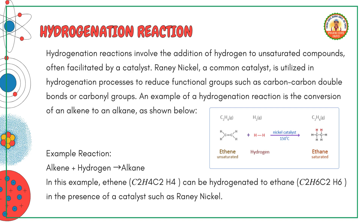Example reaction: alkene plus hydrogen gives alkane. In this example, ethene (CH₂=CH₂) can be hydrogenated to ethane (CH₃CH₃) in the presence of a catalyst such as Raney-nickel.